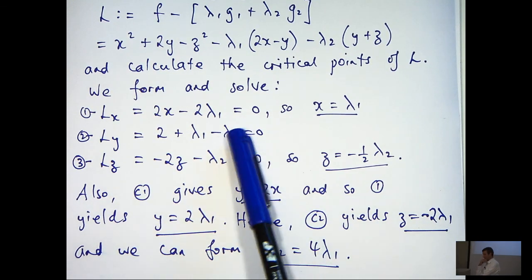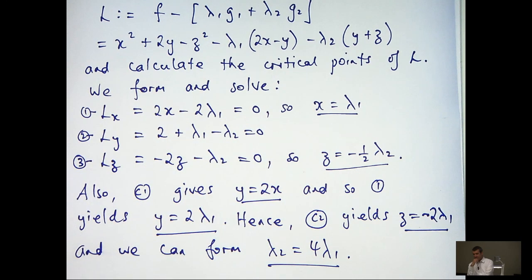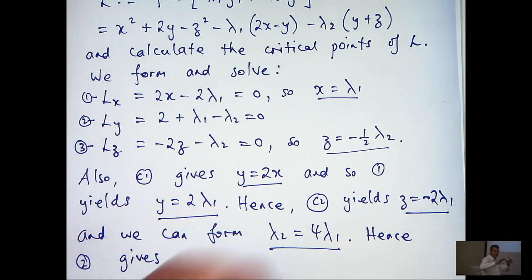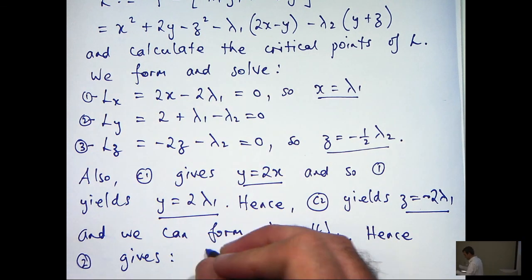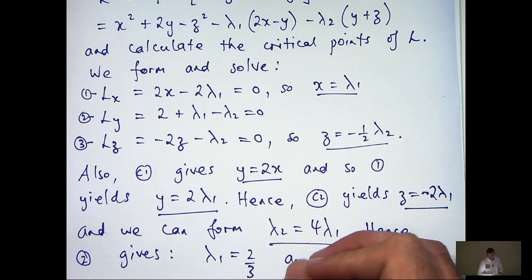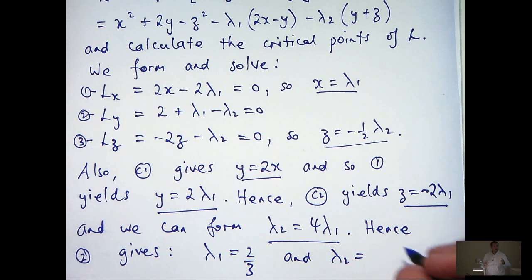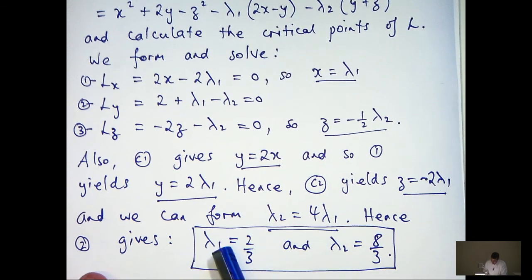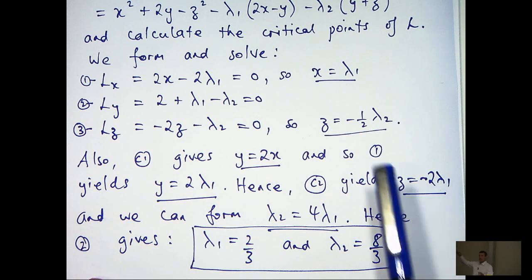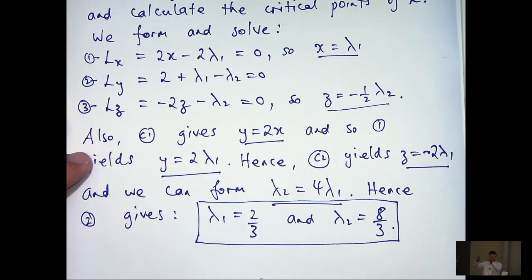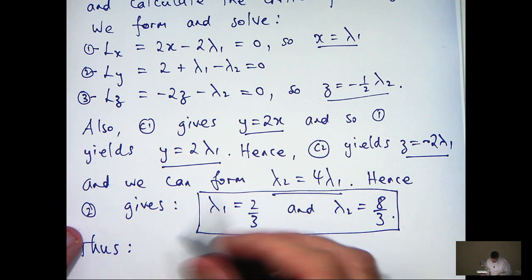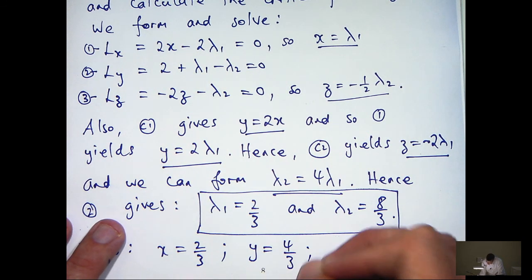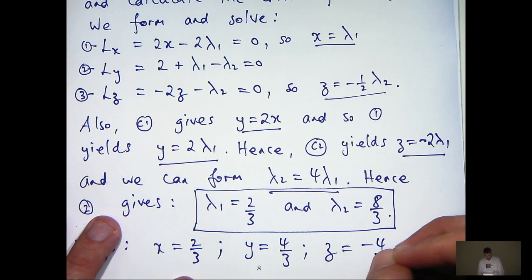I can take that and substitute it in for λ2. Substituting in, I'm going to get λ1 equals 2/3 and λ2 equals 8/3. This is the important information we're going to work with. I can now back-substitute to get x, y and z. So x will equal 2/3, y will equal 4/3, and z will equal minus 4/3.